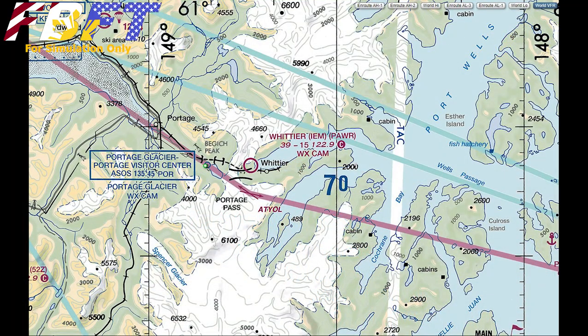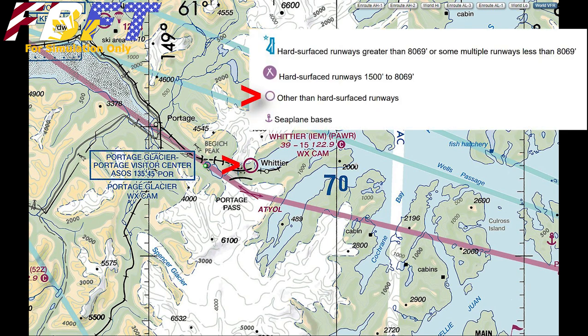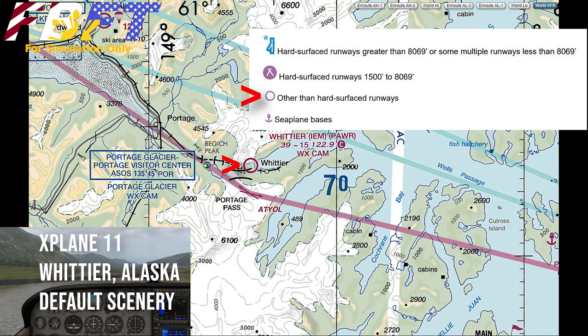The first item we are going to check out on these VFR charts is airports. The circle left of center on this map is Whittier, Alaska, and you can see on the map legend that the circle indicates an other than hard surface runway. Then you can see in the X-Plane 11 scenery it appears to be a gravel runway.